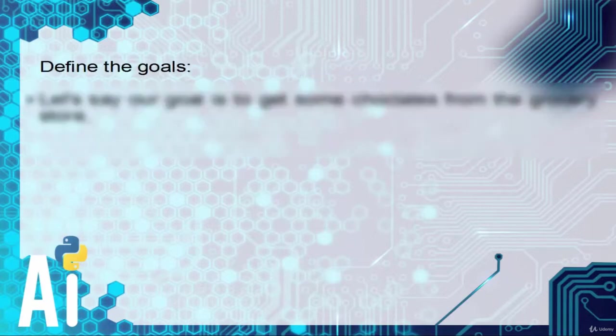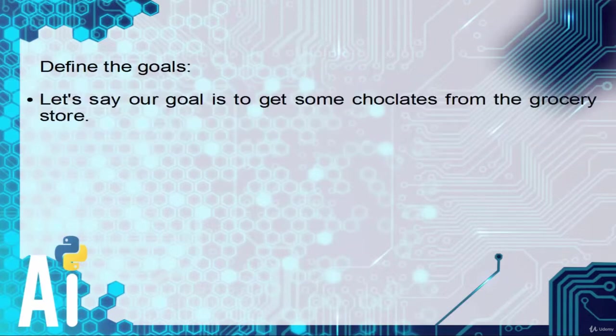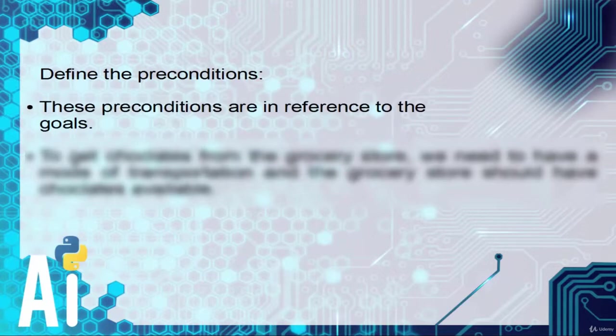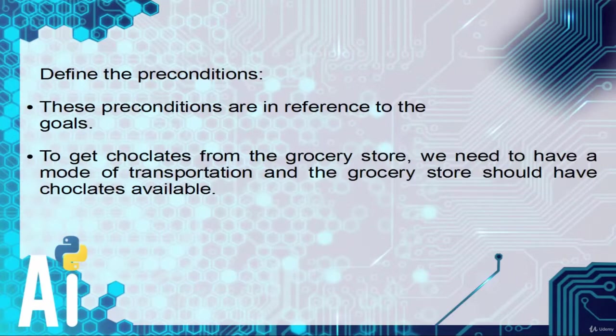The first step is to define the goal. Let's say our goal is to get some chocolate or get a car or whatever. If you want chocolate, it's in the grocery store. The next step is to define the preconditions. These preconditions are in reference to the goal. To get chocolates from the grocery store, we need to have a mode of transportation and the grocery store should have chocolates available.